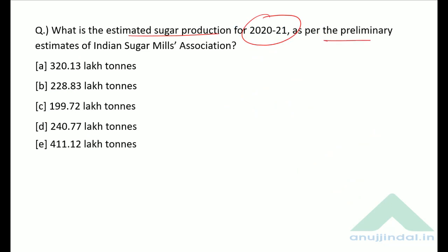What is the estimated sugar production for 2020-21 as per the preliminary estimates of the Indian Sugar Mills Association? The correct answer is option A — 320.13 lakh tonnes.